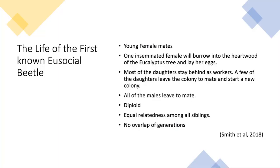Although most of the females will stay behind at the nest, a few will leave in order to start their own colony. The female will find a mate, and once inseminated, she will burrow into the heartwood of a eucalyptus tree and lay her eggs. On reaching maturity, most of the daughters will stay behind and help their mother by caring for her larvae, cultivating fungi, forming tunnels, and all the tasks required for their colony to survive.